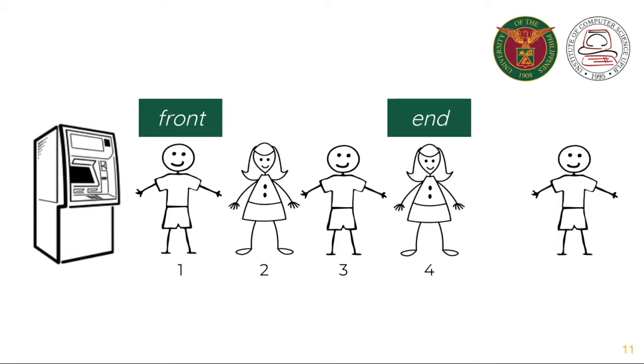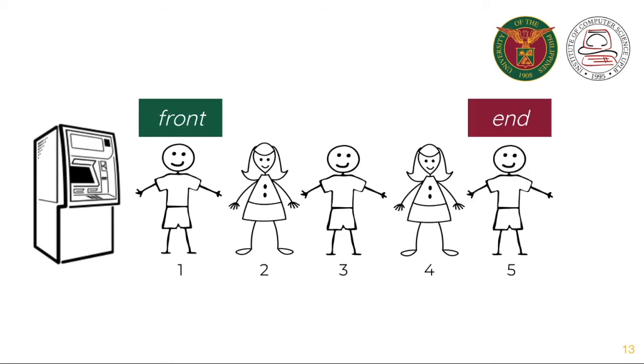When a new person arrives and he also wants to use the ATM, he has to line up at the rear end of the queue. That operation is called enqueue. So person number five is now the new end of the queue.